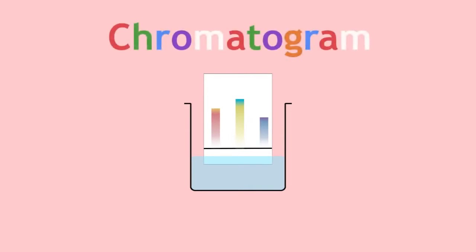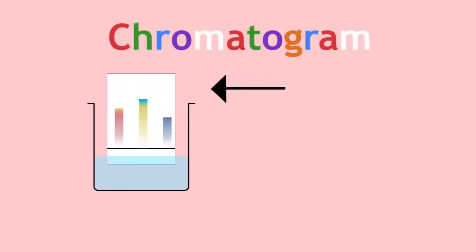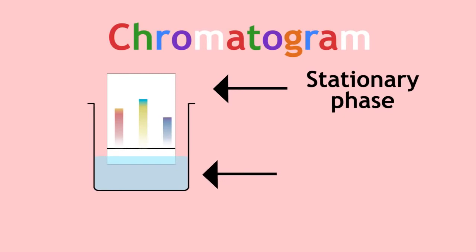We have now created a chromatogram. The chromatography paper is called the stationary phase as it stays put. Water is called the mobile phase as it moves up the chromatography paper.